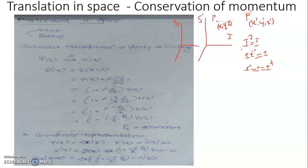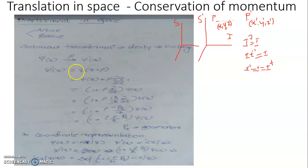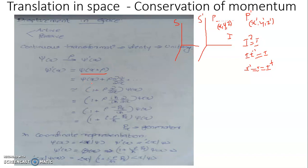The transformation is unitary by its inherent nature. We assume that at point P, the system has been represented using a state function psi of x, and it suffers an active displacement rho from P to P prime, so that at P prime the wave function is represented by psi prime of x. Of course, psi prime of x will be equal to psi at x plus rho. This can have a Taylor series expansion, as psi is always a mathematical function.